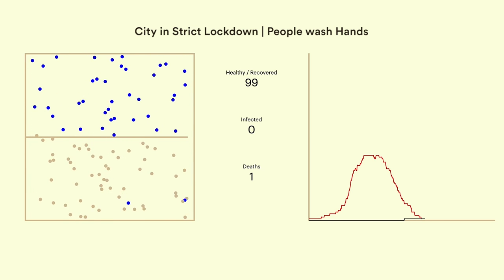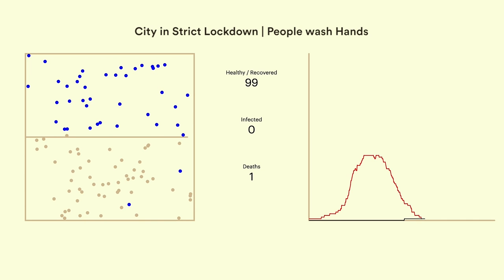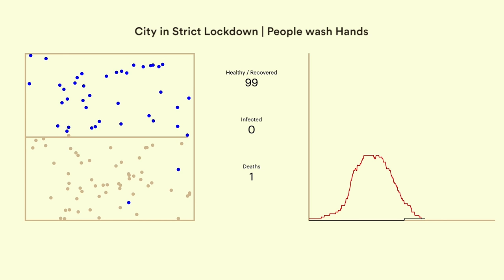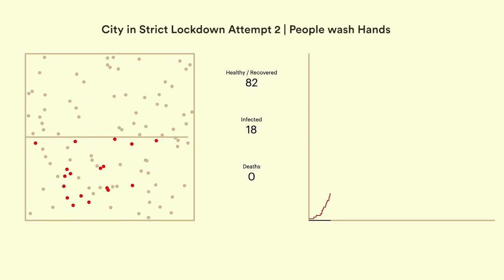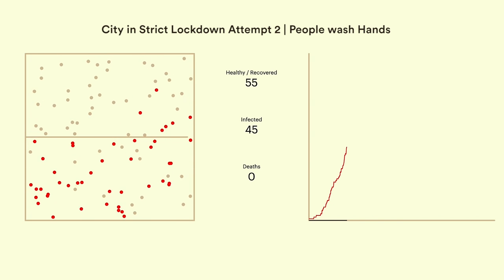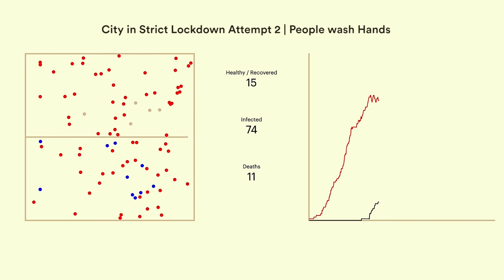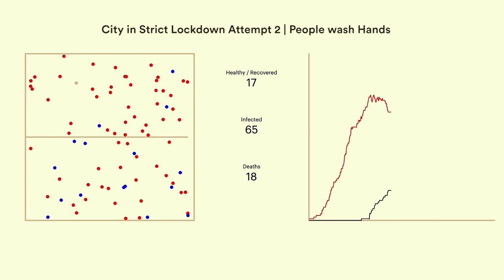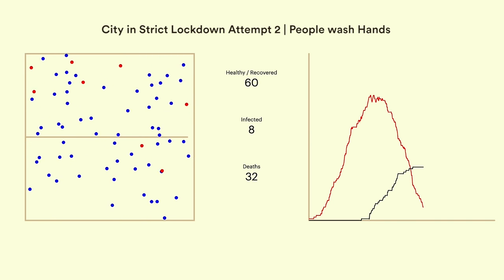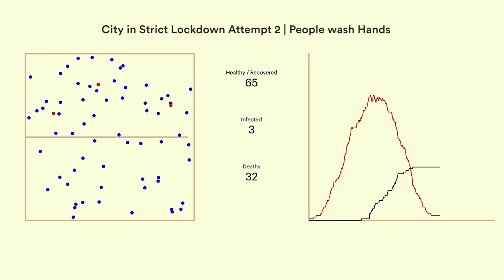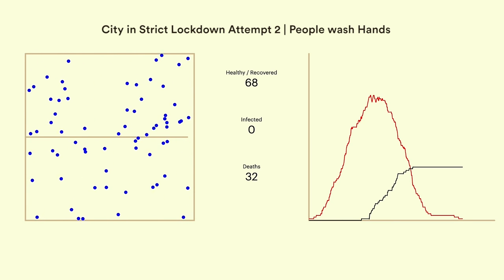This is amazing. We could restrict the number of deaths to just one and save the other half of the city completely. This is what happened in Wuhan after the Chinese government imposed a severe lockdown. But what happens if we run the simulation again? In this run, despite the same setup with just one person escaping the lockdown, we see the deaths again rise to 32%, meaning lockdowns can be broken easily.